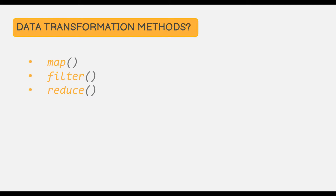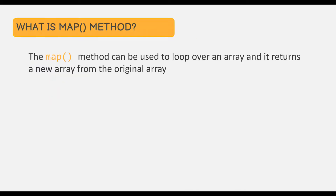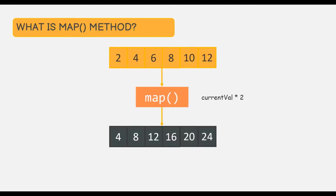The map method can be used to loop over an array and it returns a new array with transformed data from the original array. Let's understand this with an example. Here we have an array with these numeric elements, and we are calling this map method on this array.